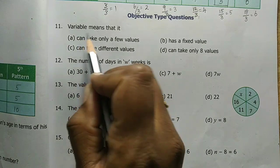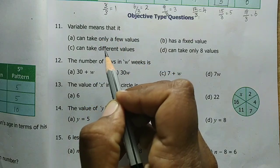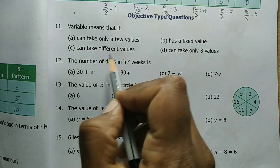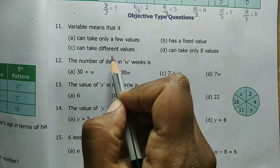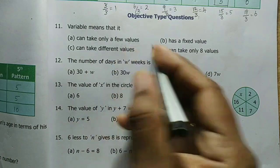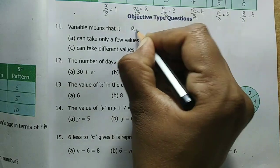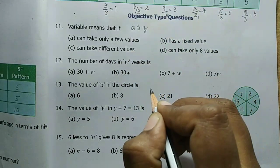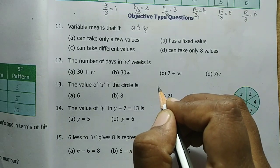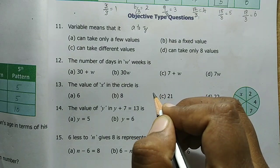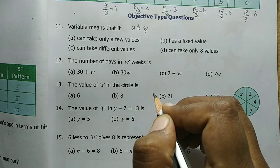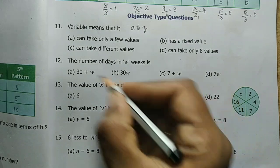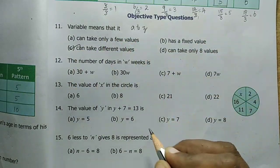First one, variable means that it. Variable can take different values. So why do we mention it? In the letters alphabet, we can take different values.